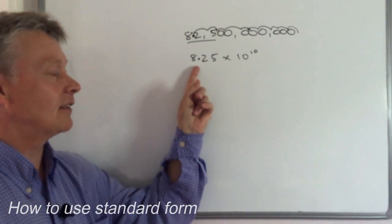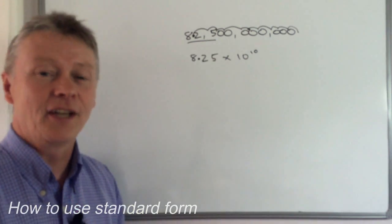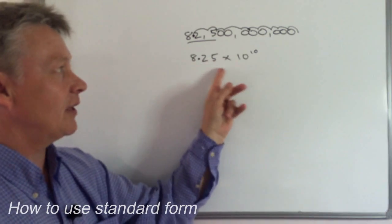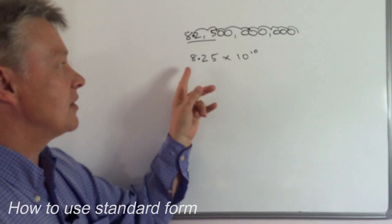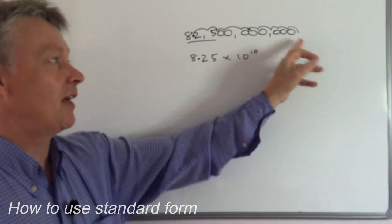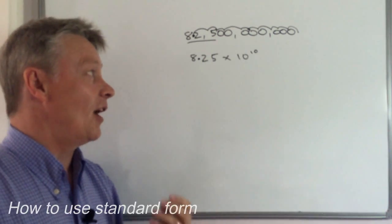So what I'm saying is this number has had its decimal point moved by 10 different jumps. And you can see if I wanted to write this number out again, all I would do is I'd write 825 and then all of the zeros to make this number the same as it is originally.